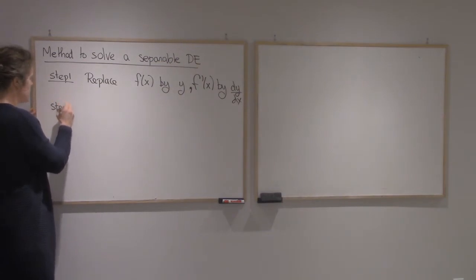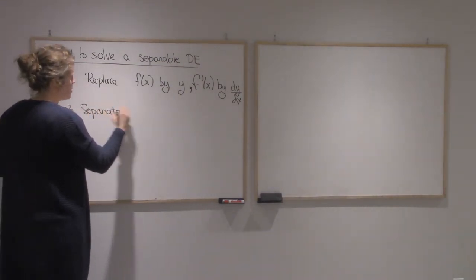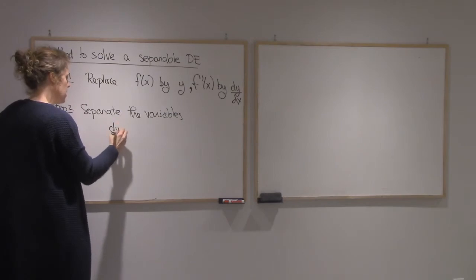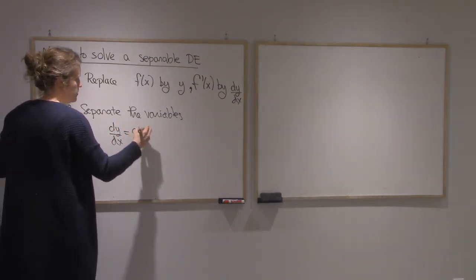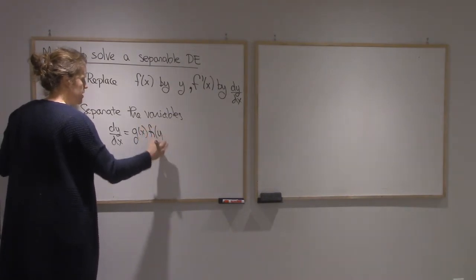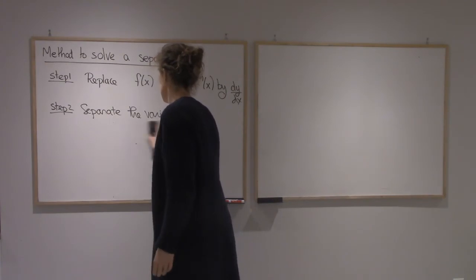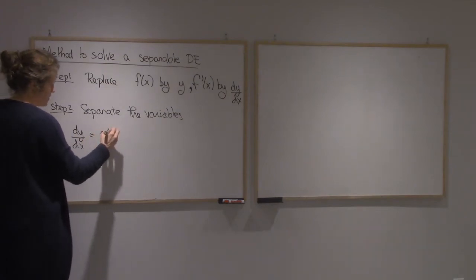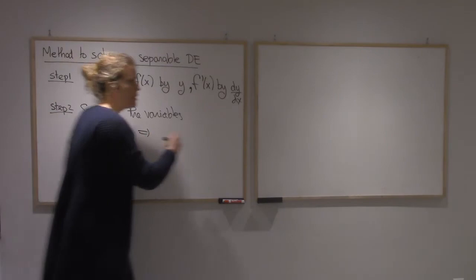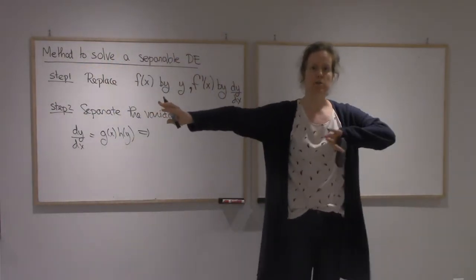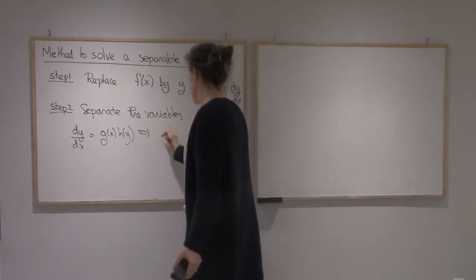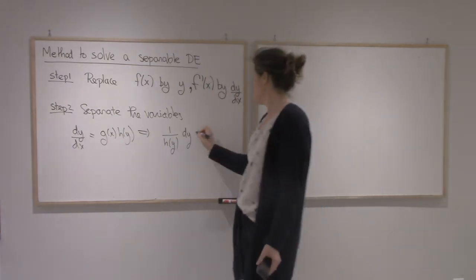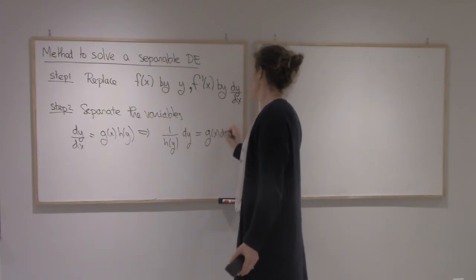Alright, so once you've done that, you separate the variables. So if you have dy over dx equals g of x times h of y, you want to put all of the y's on one side of the equal sign, all of the x's on the other. So in this case, I could take the h of y, send it to the left, and my dx will be on the right.